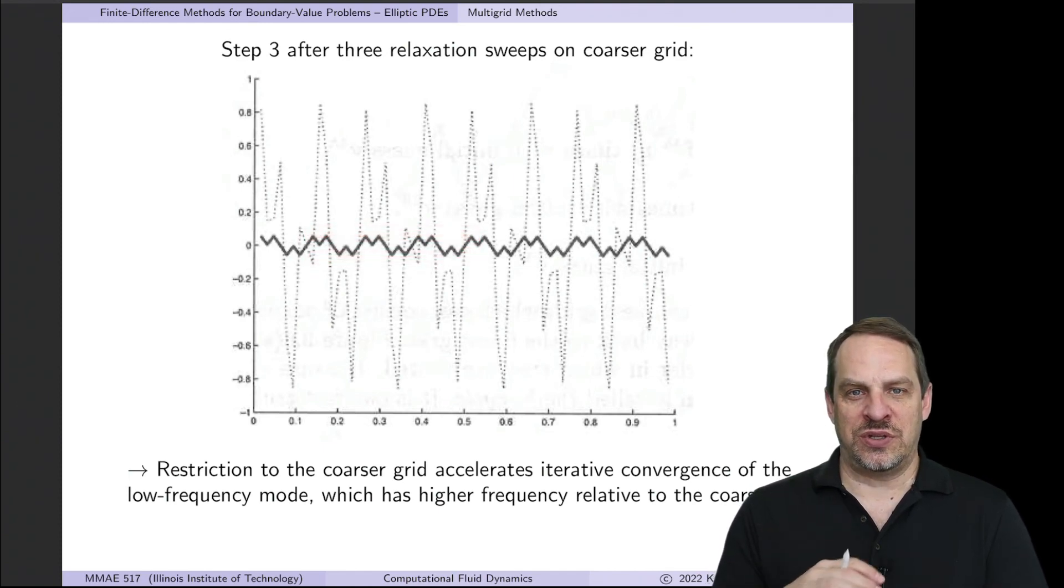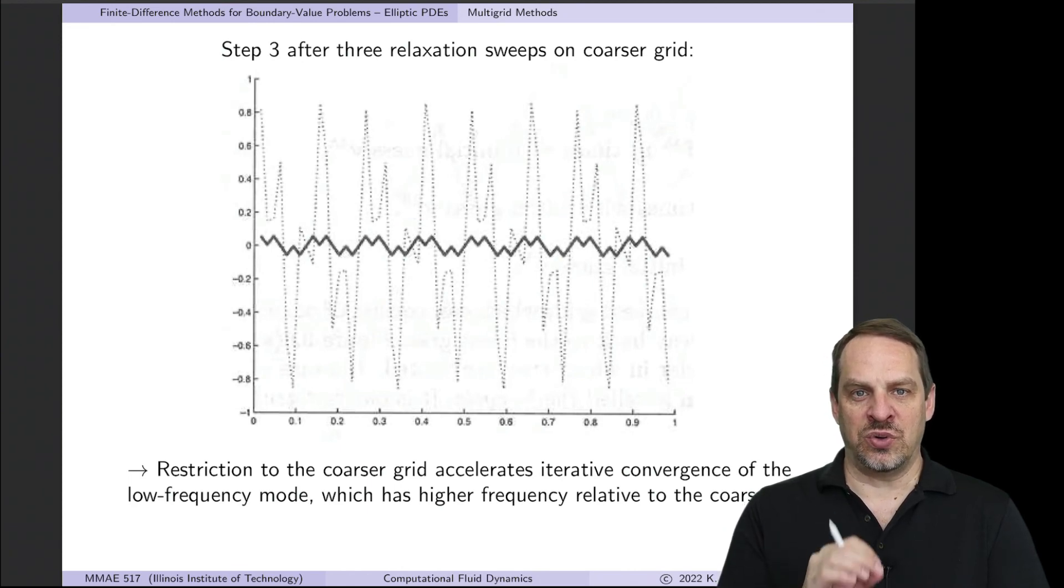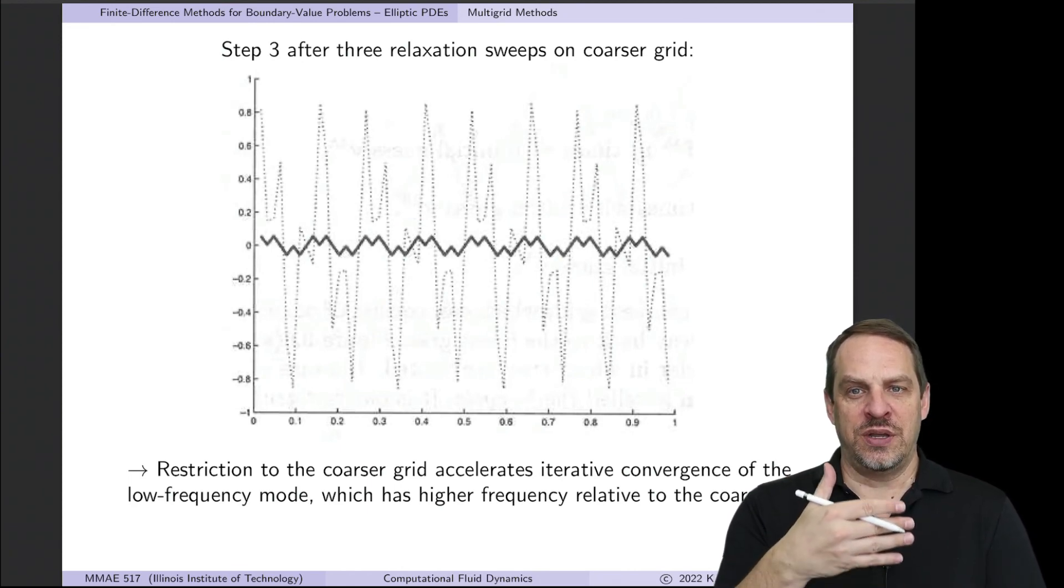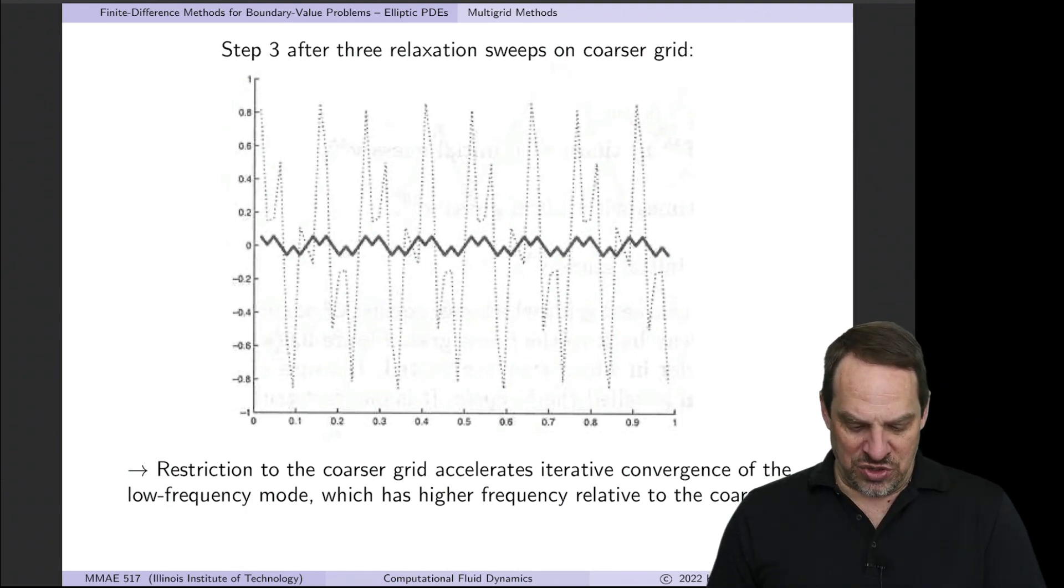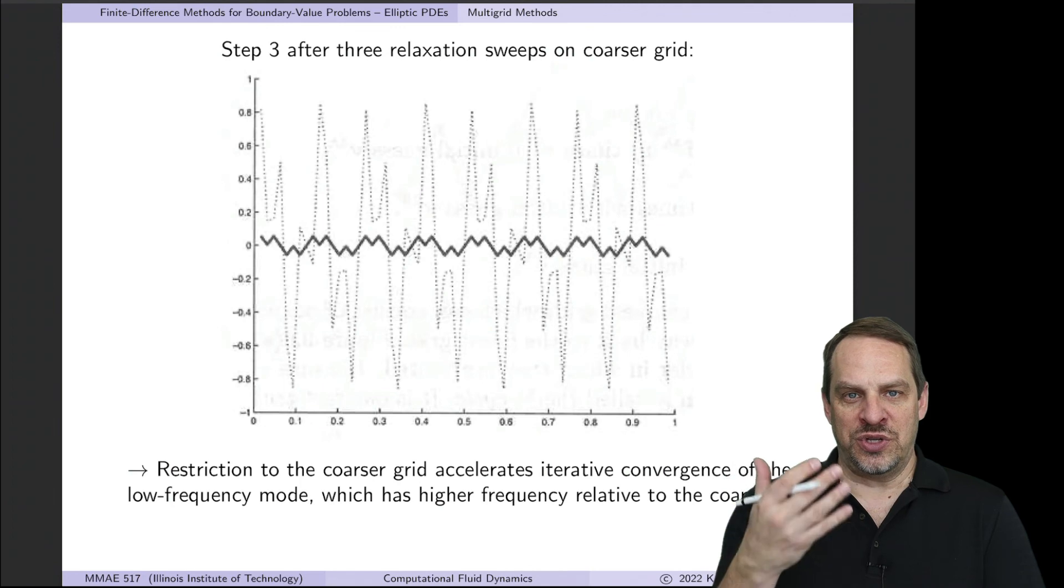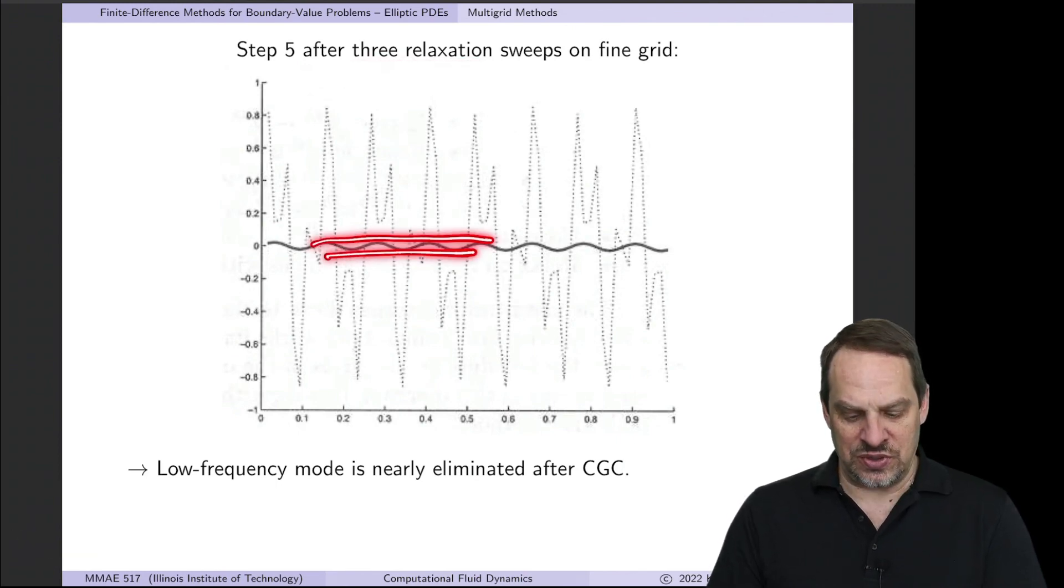And the reason why this accelerates the convergence process once again is because low frequency modes on a fine grid appear as higher frequency modes on the coarse grid. We then take the error and interpolate it back up in step four to the fine grid, and we use that to correct the original approximation we had from step one for u^h.